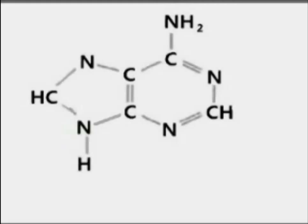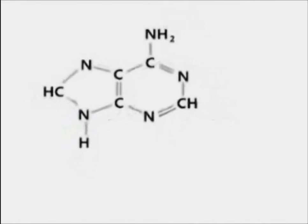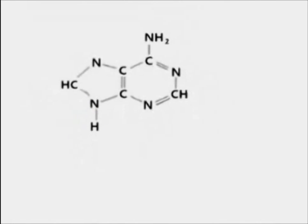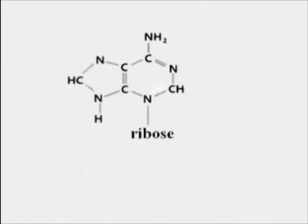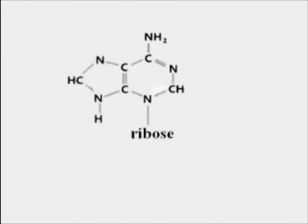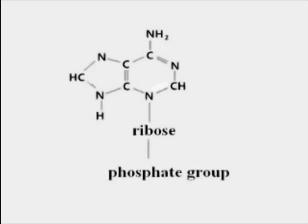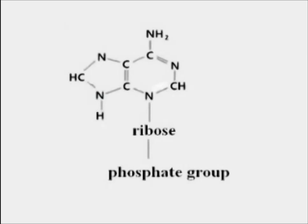To make a complete nucleotide, these bases need to gain a sugar called ribose and a group of phosphates. Biochemists think they know how the phosphate group formed, and they're now trying to find out how the ribose is attached.